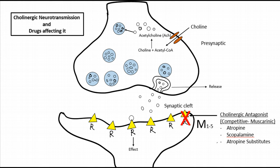Cholinergic antagonists are drugs that inhibit cholinergic receptors, mainly muscarinic receptors, and are also called anticholinergic drugs. All anticholinergic drugs are competitive blockers. Examples include atropine, scopolamine, and atropine substitutes — synthetic atropine-like drugs that form a long list.